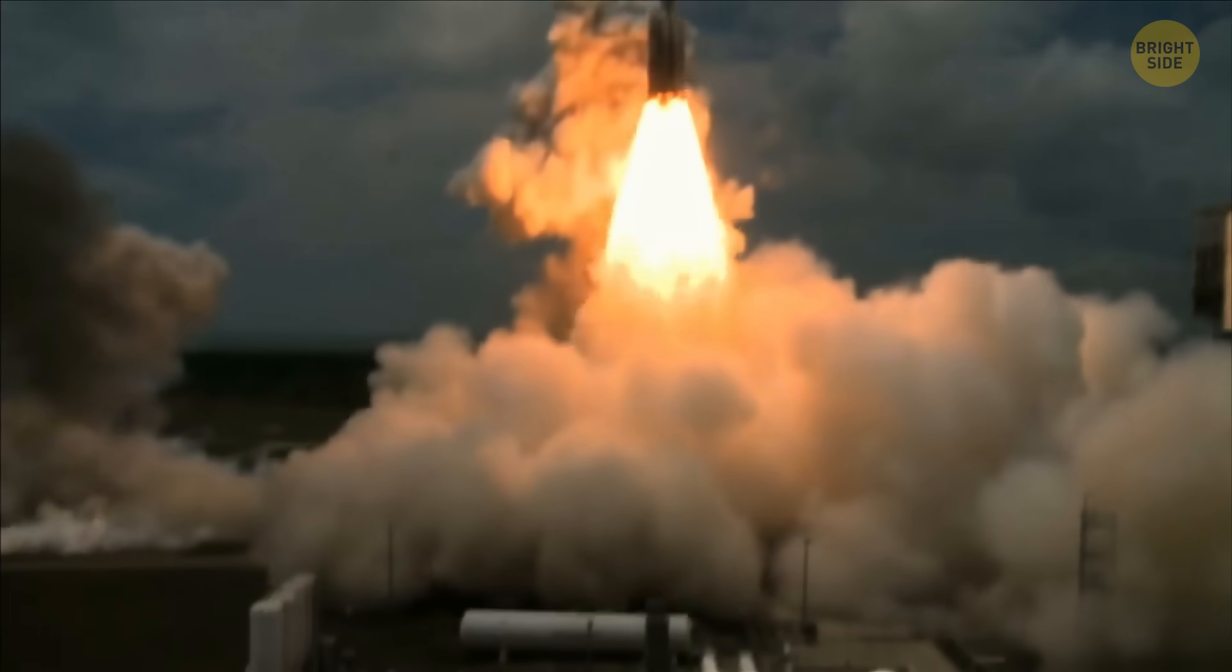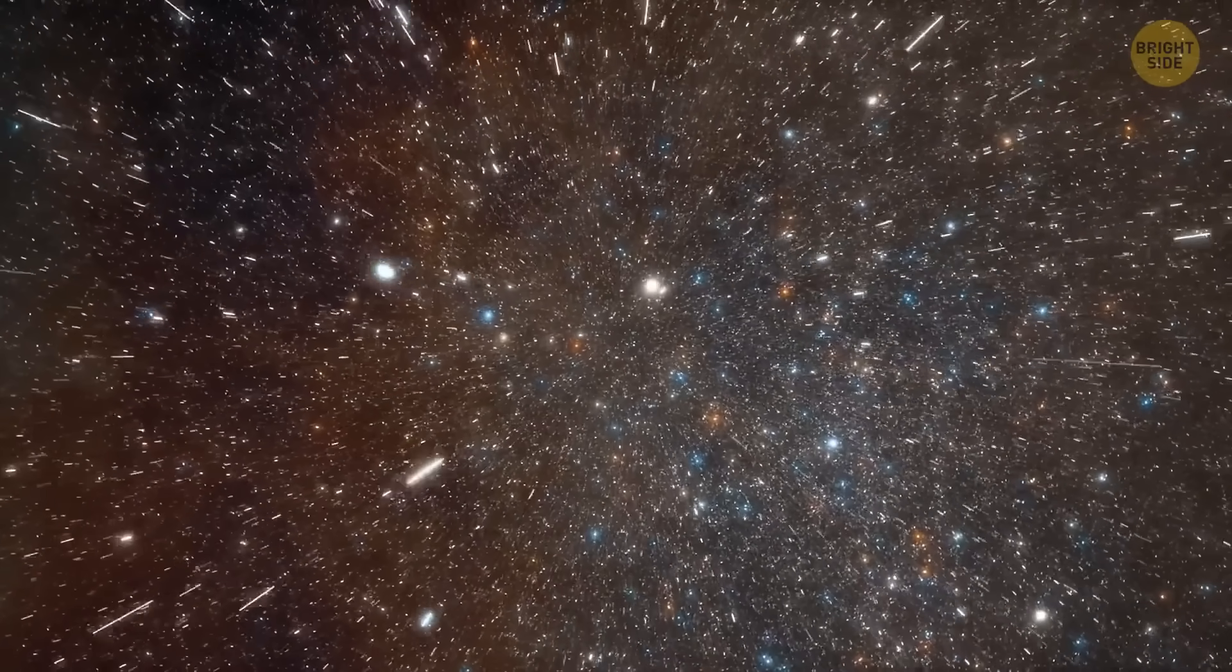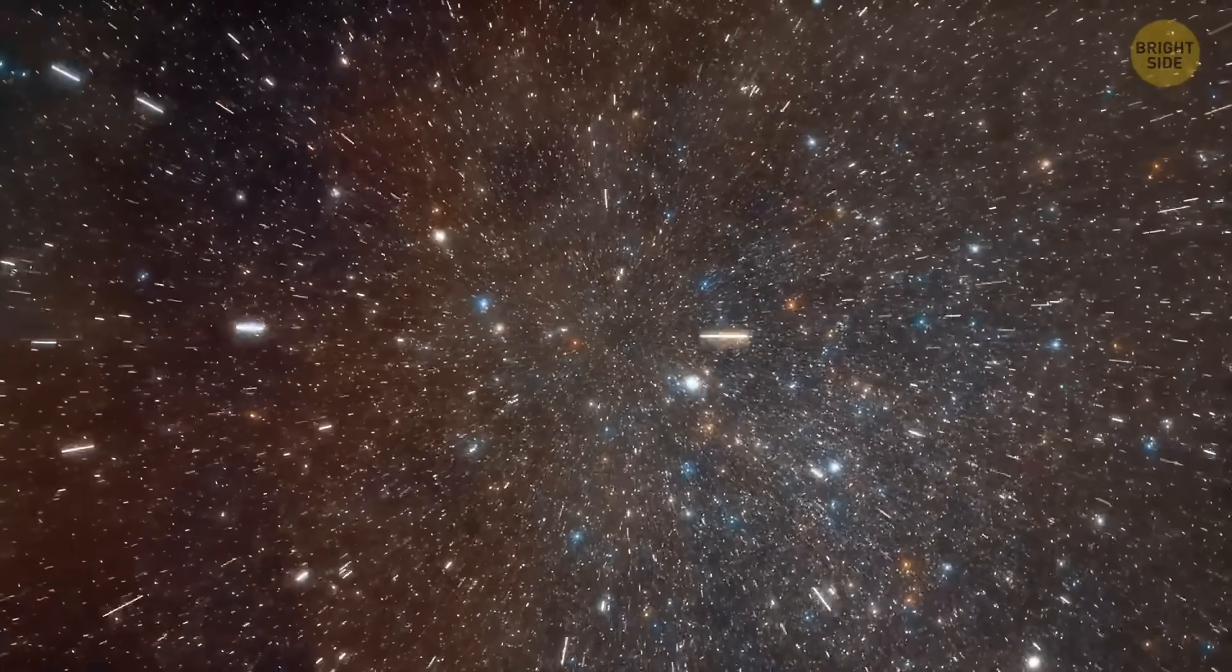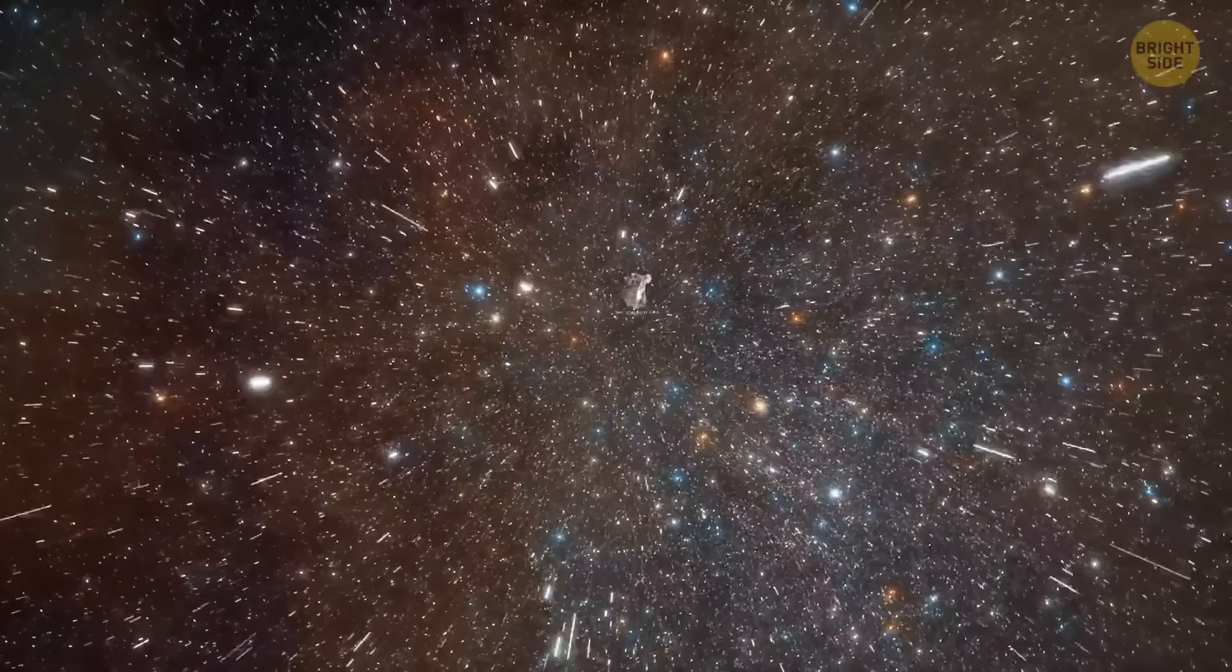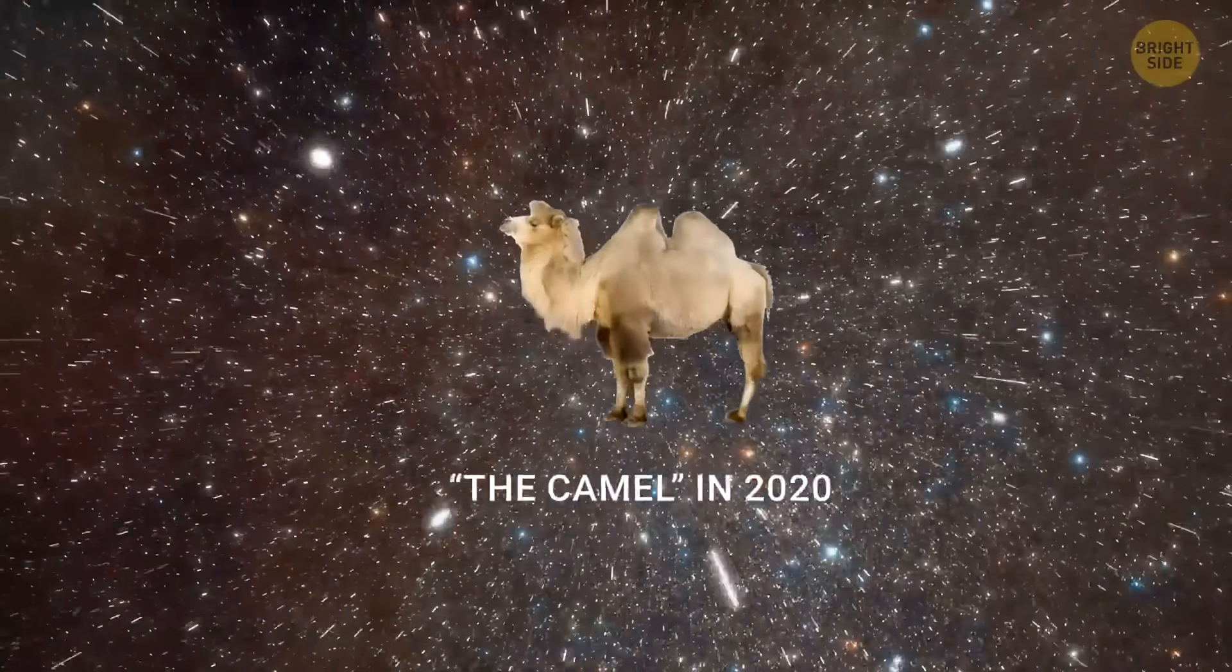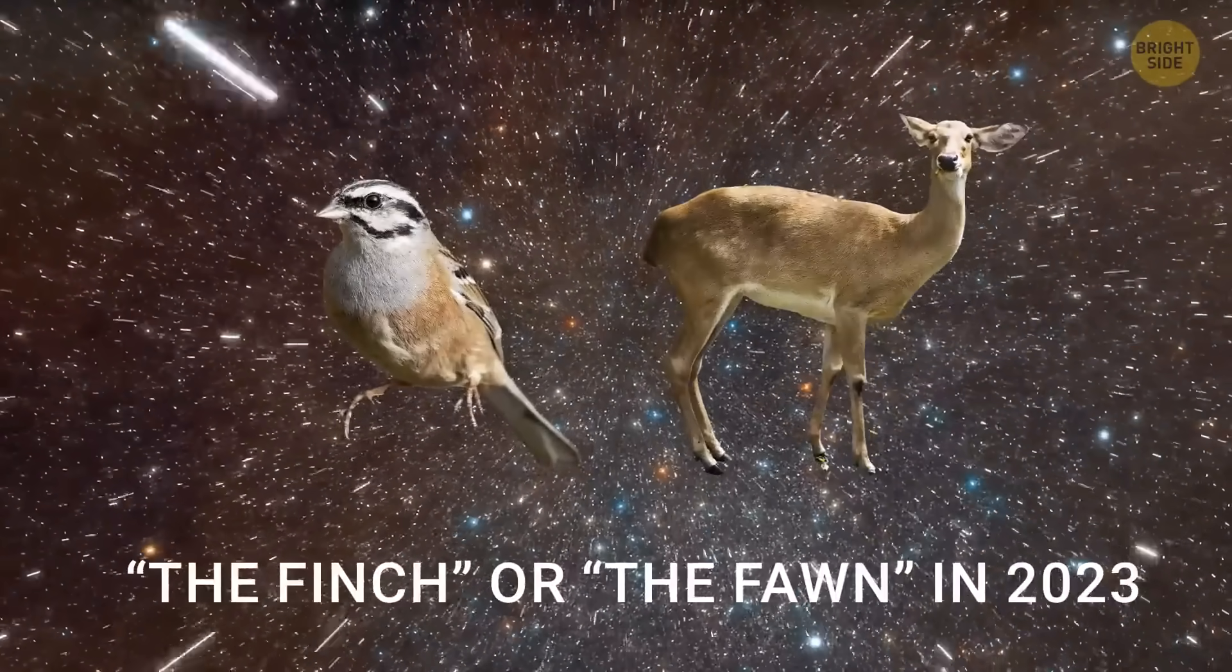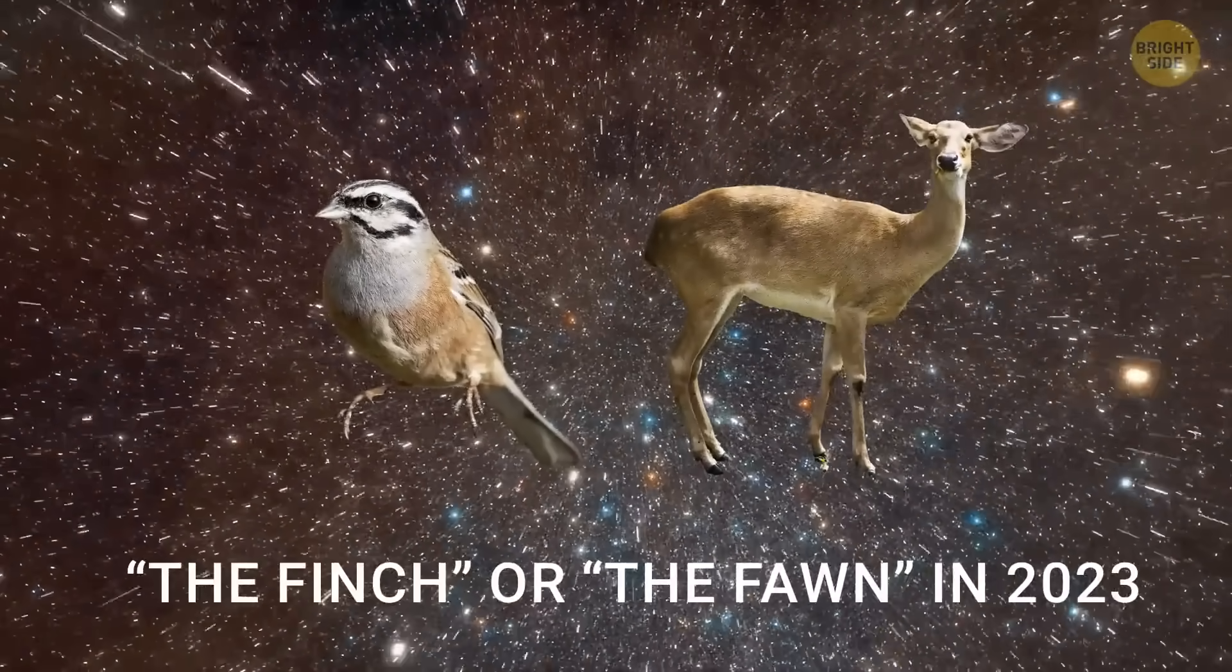Since then, astronomers have been hunting for more of those oddball explosions. And indeed, they've found a few more and given them weird animal names too. That's how we got the koala in 2018, the camel in 2020, the Tasmanian devil in 2022, and the finch or the fawn in 2023.